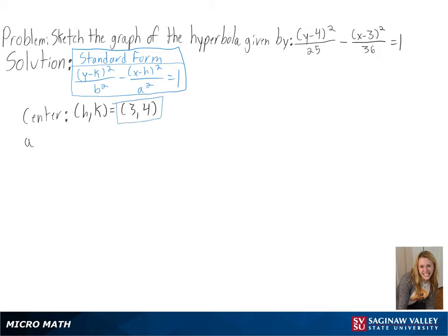Next we need to figure out a and b since they will determine our vertices. For a we get 6, so we will be going left and right 6 units, and for b we get 5, so we will be going up and down 5 units.